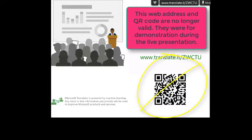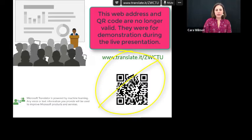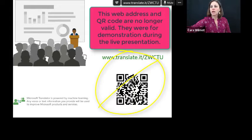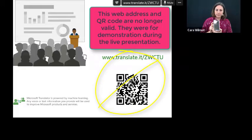Today we are using the power of Microsoft Office 365 Translator in PowerPoint. If you would like to follow along on your own personal device, you can by using your smart device. Hold it up with the camera open to the QR code and it'll bring up a link, or you can type in translate.it forward slash ZWCTU. You would go to that link and you actually will have to put the conversation code, use the camera to automatically input it.